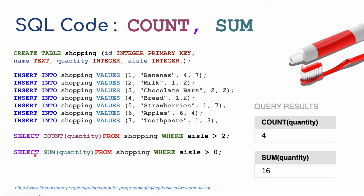Now for SUM: SELECT SUM(quantity) FROM shopping WHERE aisle is greater than zero — so that includes all items. We have four bananas, one milk, then adding up chocolate bars, bread, toothpaste, and six apples, we get a total sum of 16. So we could have 16 items in our trolley or basket at the end.